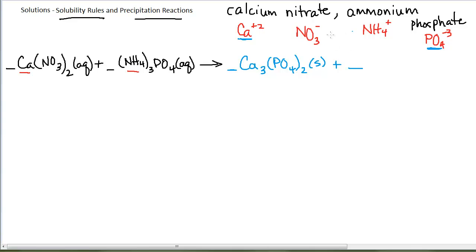My other product is of the other two remaining ions. Remember that we always write the cation first, and so my other product is ammonium nitrate, NH4NO3. If I check my solubility rules, that is soluble, so this will be aqueous.